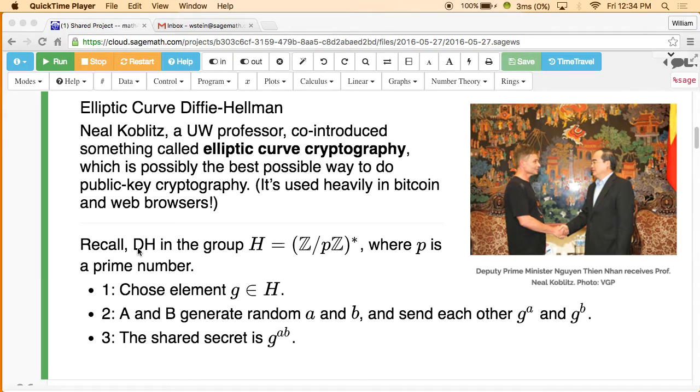So remember Diffie-Hellman, the thing we talked about on Monday, it's something that you do in the group of numbers modulo p under multiplication. So I've written that as Z mod pZ with an asterisk, meaning it's you just take the non-zero numbers modulo p, and they're a group under multiplication. If you multiply two numbers, you get another number in here by just reducing it modulo p, and there's inverses. Given any number, there's an inverse modulo p, that is, some other number you can multiply it by so that you get one.